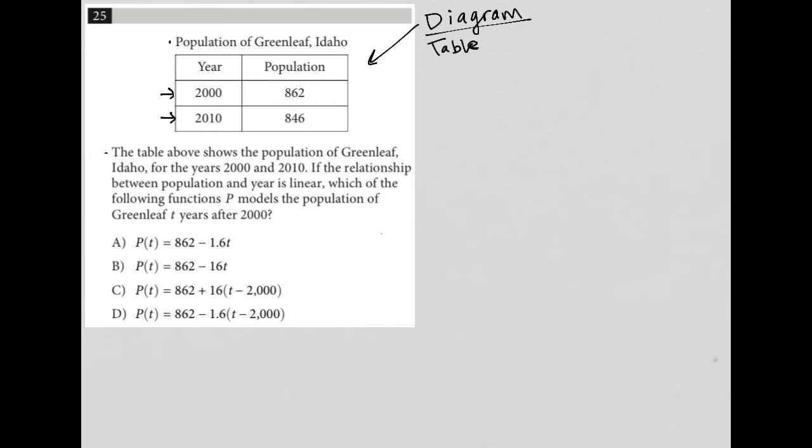So the question goes on to say the table above shows the population of Greenleaf, Idaho for the years 2000 and 2010. If the relationship between population and year is linear. So that's a hint. Every time I see that word, I immediately write down y equals mx plus b. That's our equation for a line.